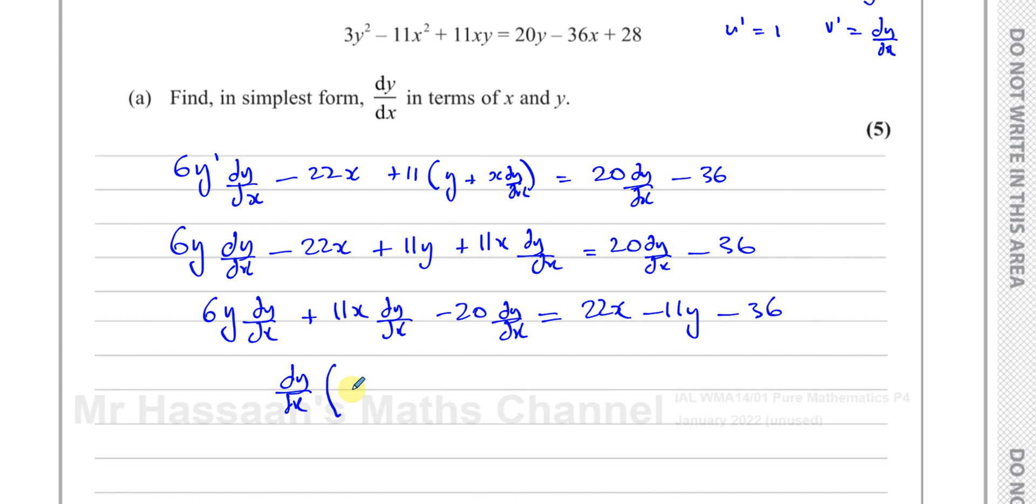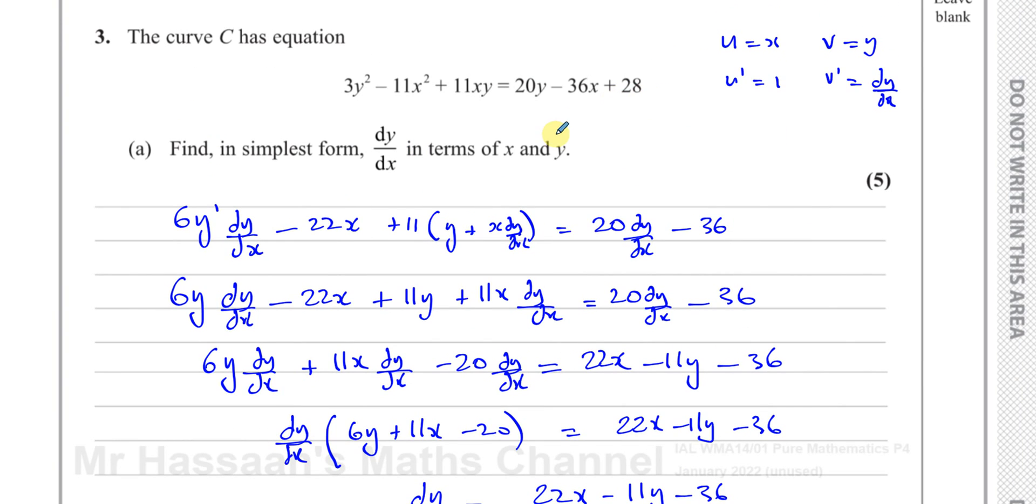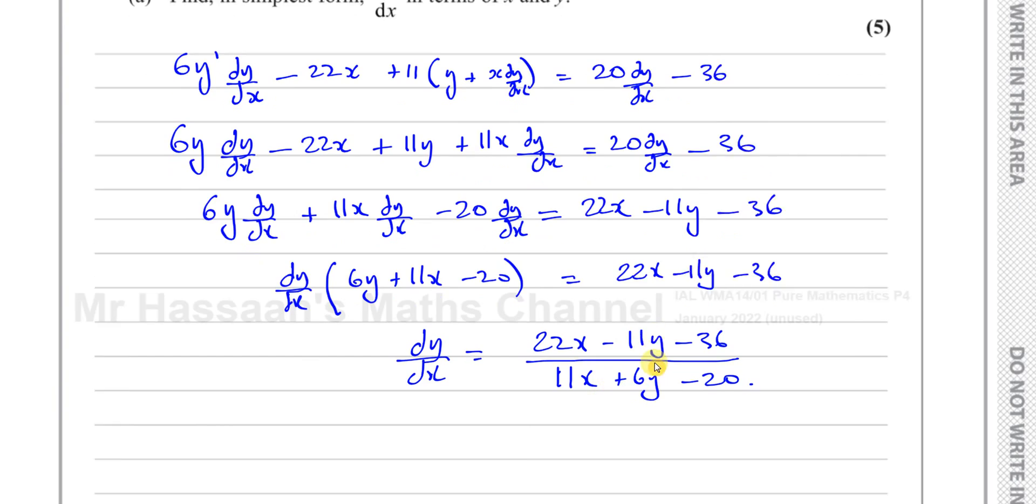Now the common factor in these three terms is dy/dx. So I'll put dy/dx times (6y + 11x - 20) = 22x - 11y - 36. So now I can divide both sides by this factor, leaving myself with dy/dx on one side. So I've got dy/dx = (22x - 11y - 36)/(11x + 6y - 20). And that's our expression in simplest form for dy/dx. Is there any common factors? Nope. So that's my answer.